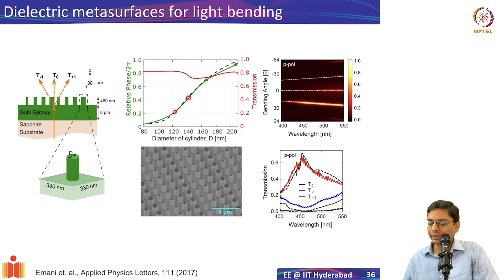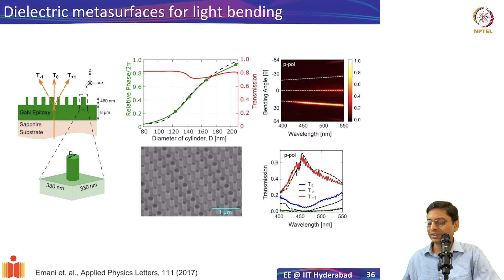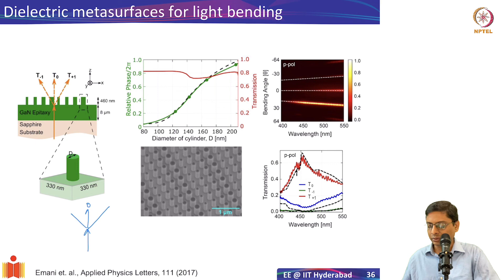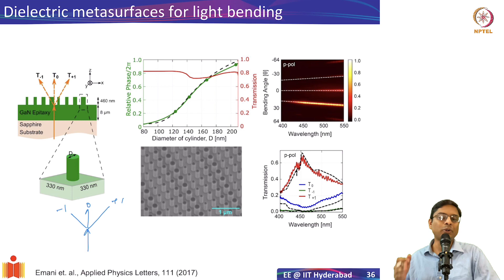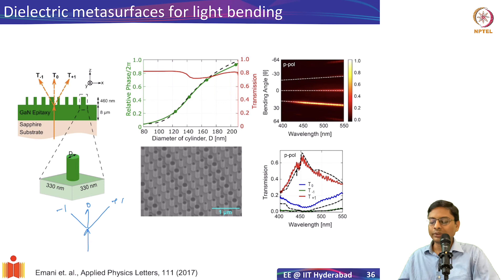We selected four different diameters giving four different phases and arranged them along the x-direction to create a phase gradient, causing light to bend — the same principle we saw earlier. The structure directs light into a particular diffraction order, unlike a typical grating which produces zeroth, ±1, and higher orders symmetrically. This is demonstrated for both s and p polarization, and the relative efficiency of light going into the desired diffraction order can reach 70–80%, which is very high.